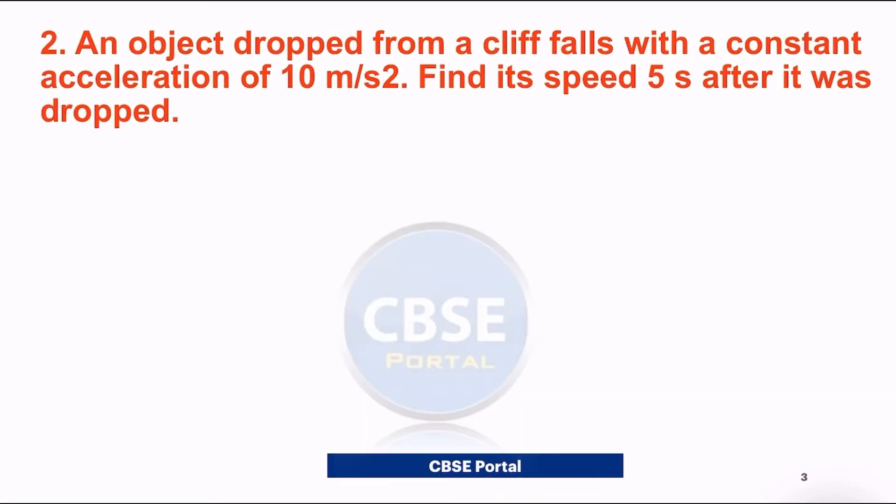Now let us solve question number two. The second question is: an object dropped from a cliff with a constant acceleration of 10 meter per second square. Find its speed after five seconds. Here, acceleration is given as 10 meter per second square, and time is given.